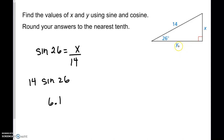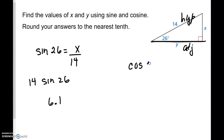Now they want to find Y. Y is the adjacent side, and we have the hypotenuse, so that ratio is the cosine of 26 equals adjacent over the hypotenuse of 14. Taking 14 times cosine of 26, we get the decimal value 12.6.